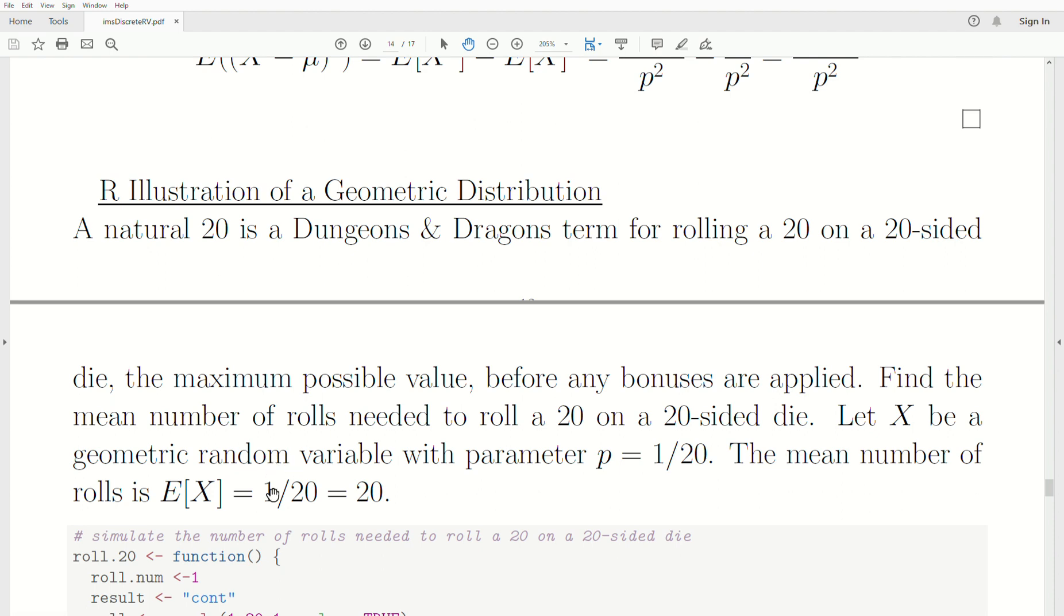Yeah, this should be 1 over 1/20, which is 20. So this is not right. It's 1 over P, but P is 1/20. When you're rolling the 20-sided die, the probability of rolling a 20 is 1 over 20. And so this is 1 over P, which is 1 over 1/20, which is 20. So that's a little error there.